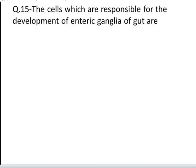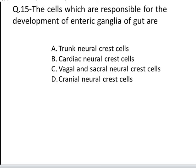The next question is: the cells which are responsible for the development of enteric ganglia of the gut are. These are your four options: A. Trunk neural crest, B. Cardiac neural crest, C. Vagal and sacral neural crest, D. Cranial neural crest. Yes, the correct answer is C, Vagal and sacral neural crest.